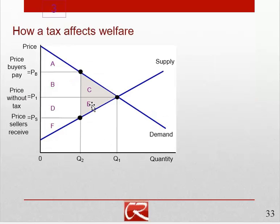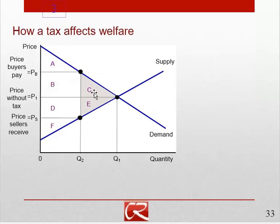C and E — very much like our price ceilings and price floors — represent our deadweight loss. Transactions have been reduced from Q1 to Q2, and these transactions between Q1 and Q2 were mutually beneficial, but they weren't mutually beneficial enough to justify going through with them once the tax was in place. The mutual benefit from a transaction equals willingness to pay minus seller cost, so all transactions between Q2 and Q1 generated less gains from trade than the amount of the tax, and therefore people don't find it worthwhile to go through with them.